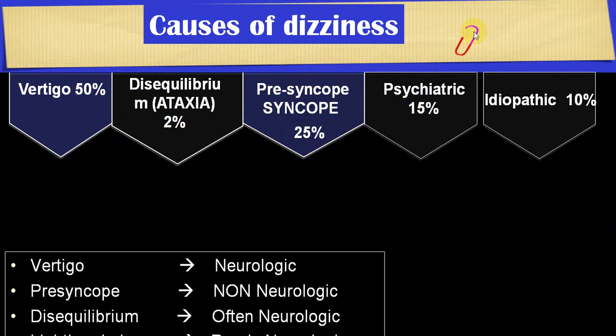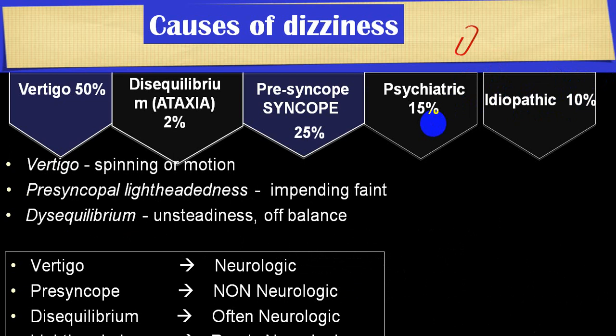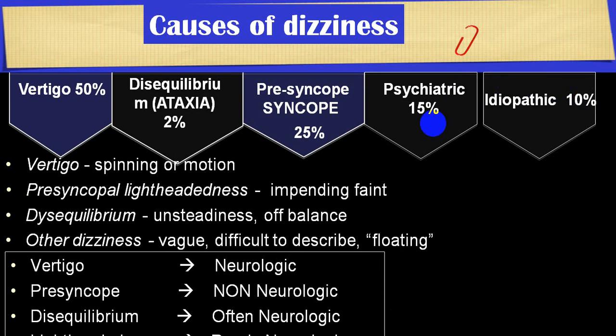Vertigo accounts for more than 50 percent, presyncope/syncope almost 25 percent, psychiatric groups almost 15 percent, ataxia 2 percent, and when we can't identify the cause it goes into the idiopathic group, accounting for about 10 percent. In vertigo the person complains of spinning attacks; in presyncope the person says they feel impending faint; in disequilibrium there is unsteadiness while walking and being off balance; and other vague complaints include floating sensation and light-headedness.